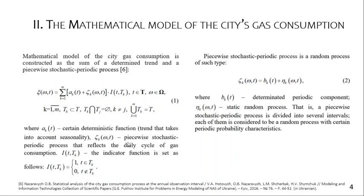The piecewise stochastic periodic processes reflect the daily cycle of gas consumption. Each piecewise stochastic periodic process assumes two components: a deterministic periodic component B(k,l) and a stochastic random process omega.